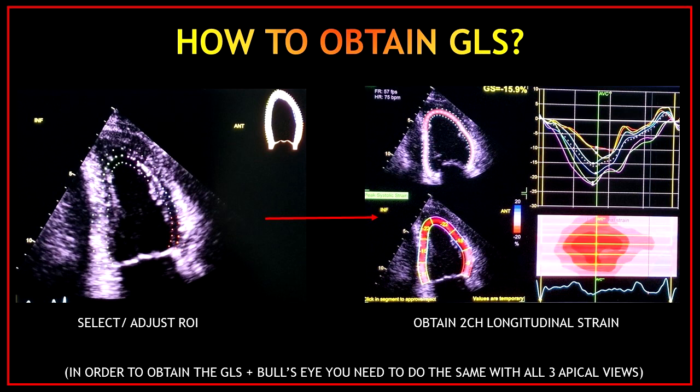Remember that in order to obtain the global longitudinal strain and the bullseye, you will need to do the same with all three apical views. If you are happy with this, just click approve and select next. Two done and one more to go — let's do this one more time.